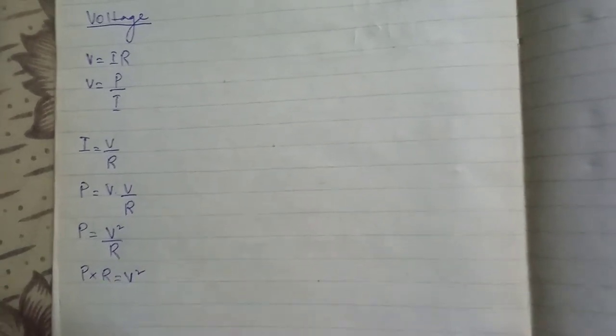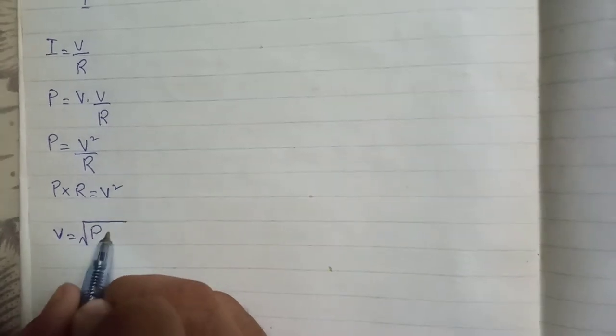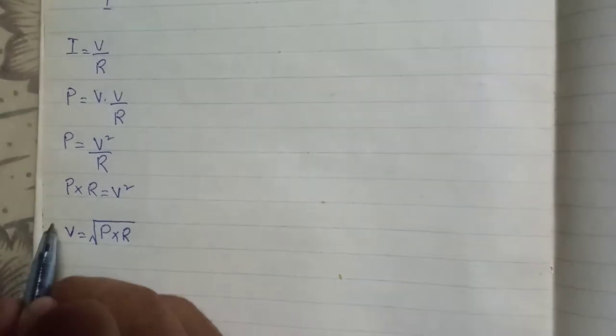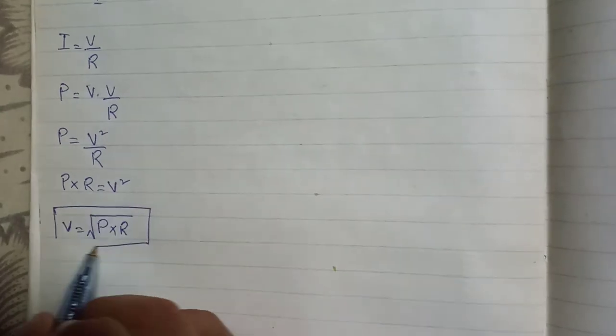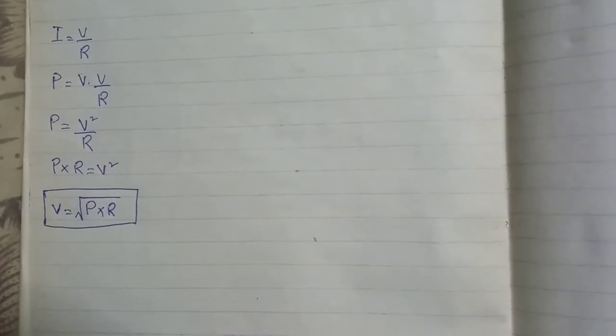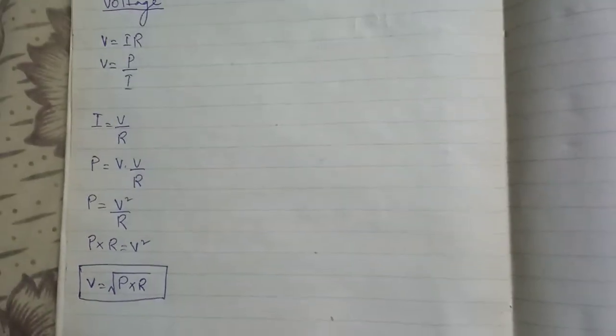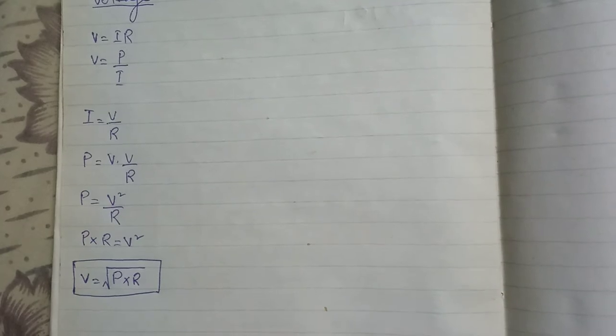PR will equal V squared. Now, by the rule of mathematics, if we want to remove the square from a variable on one side of the equal sign, the square root will come on the other side. So it becomes V is equal to the square root of P multiplied by R. This is the third formula for voltage, let it close into the box.